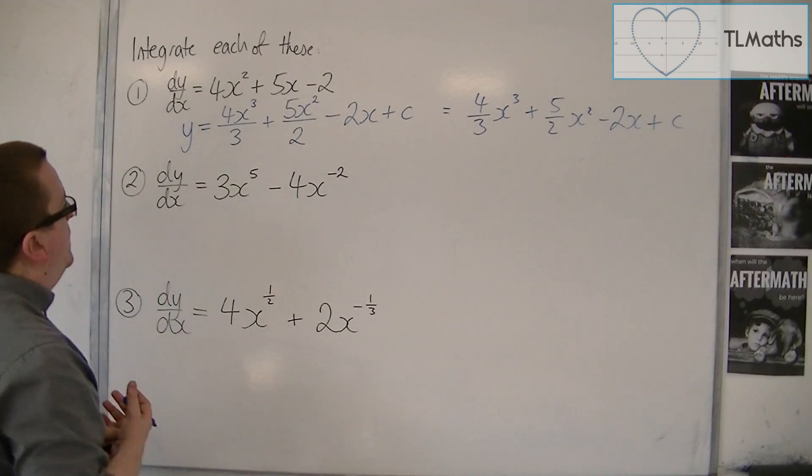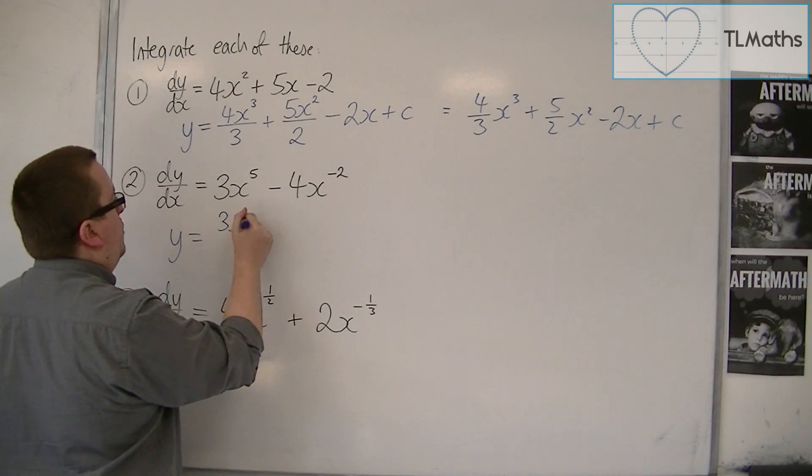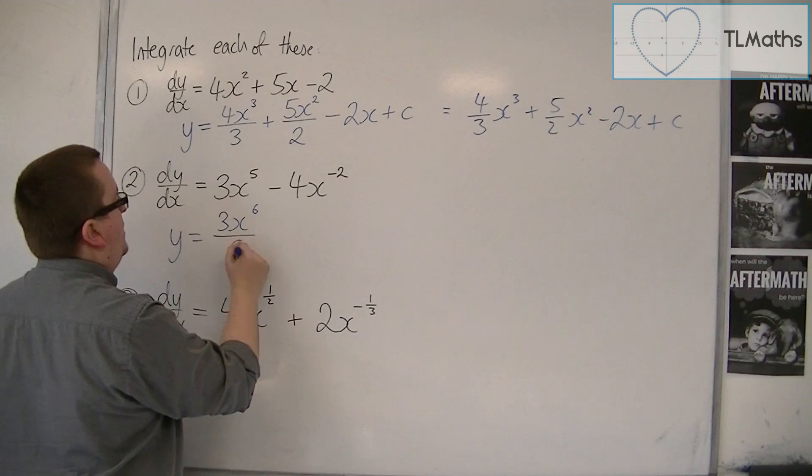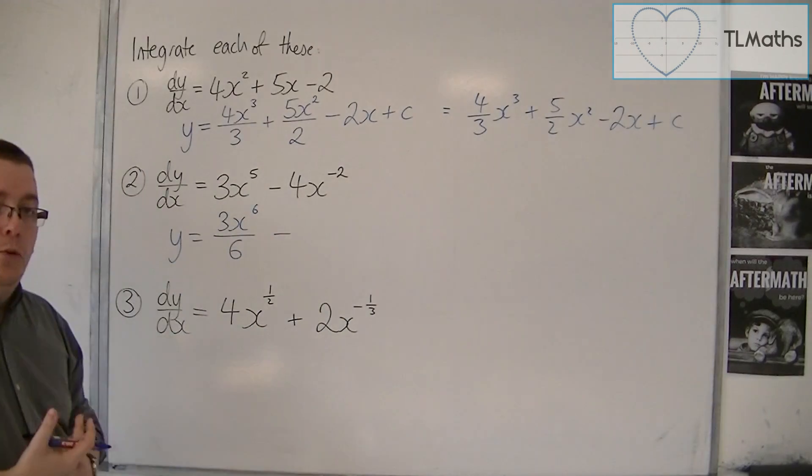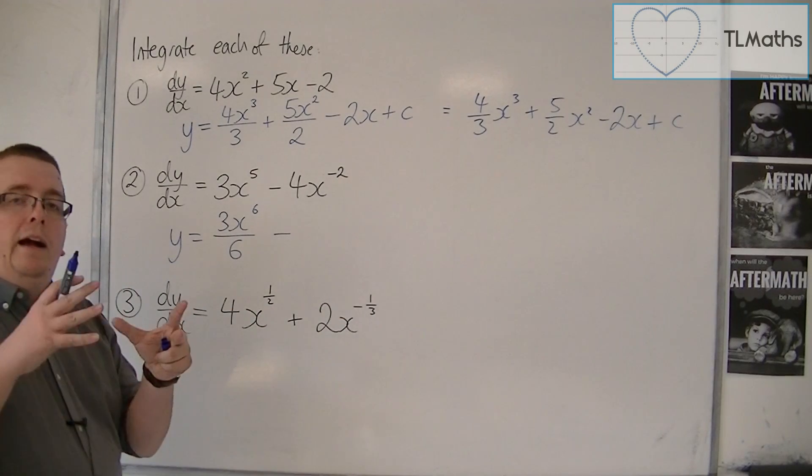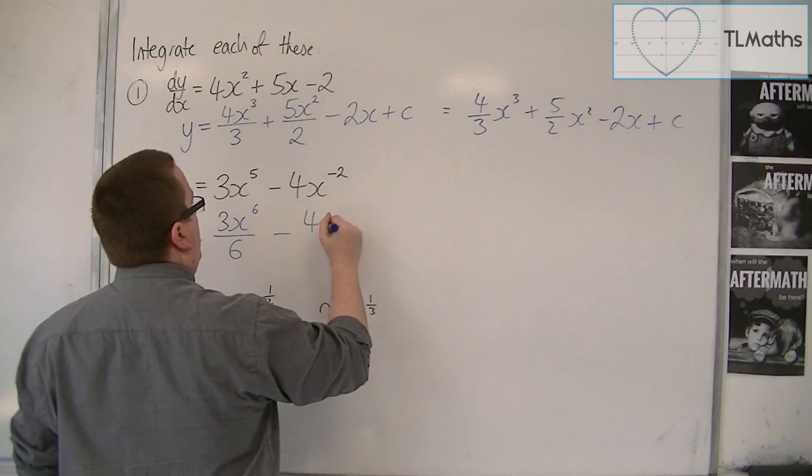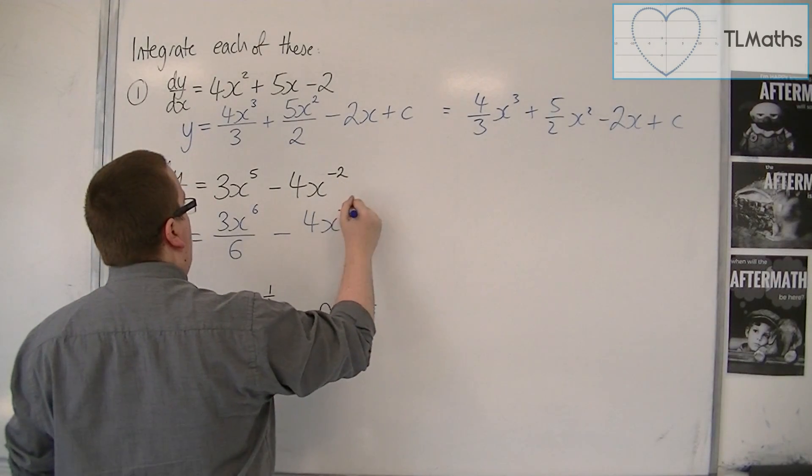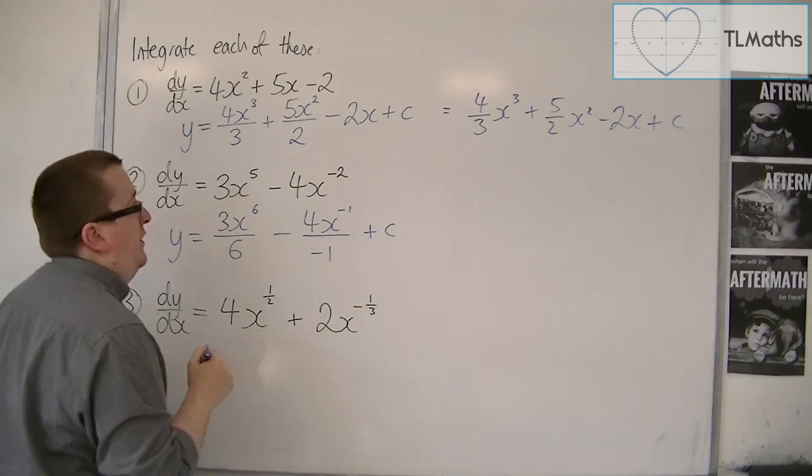Let's have a look at number 2. Here we have 3x to the 5. Add 1 to the power, divide by the new power. Then we have minus 4x to the minus 2. Even though it's a negative or fractional index in this case, we do it in exactly the same way. We're going to add 1 to the power, so add 1 to minus 2, get minus 1, divide by the new power. And then we're going to have that constant of integration.